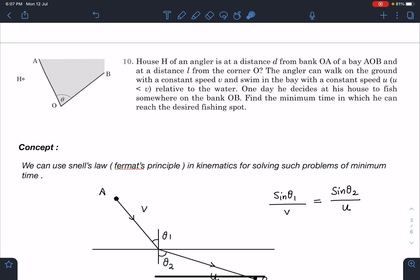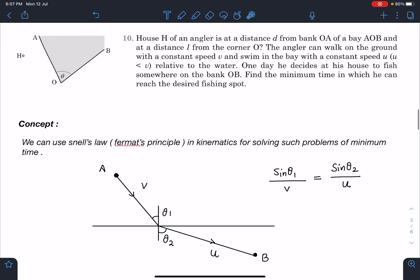Find the minimum time in which he can reach the desired fishing spot. Here on this line somewhere he has to reach, and that location is not fixed. Concept-wise, we can use Snell's Law, or it's also called Fermat's Principle, in kinematics for solving such problems of minimum time. Whenever they're asking minimum time, we can think in this direction.